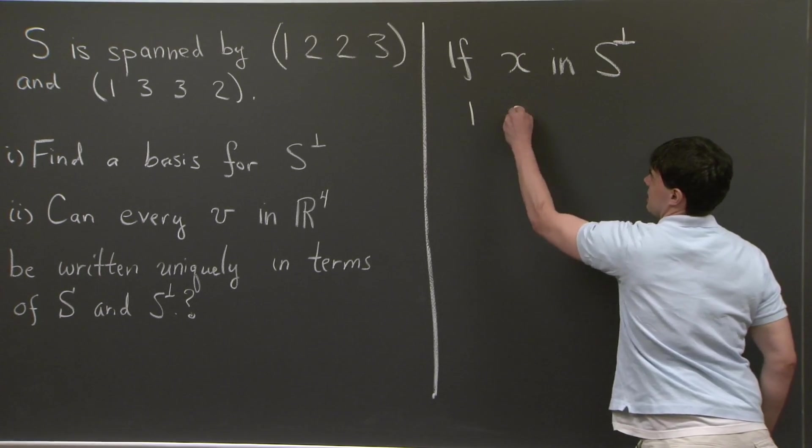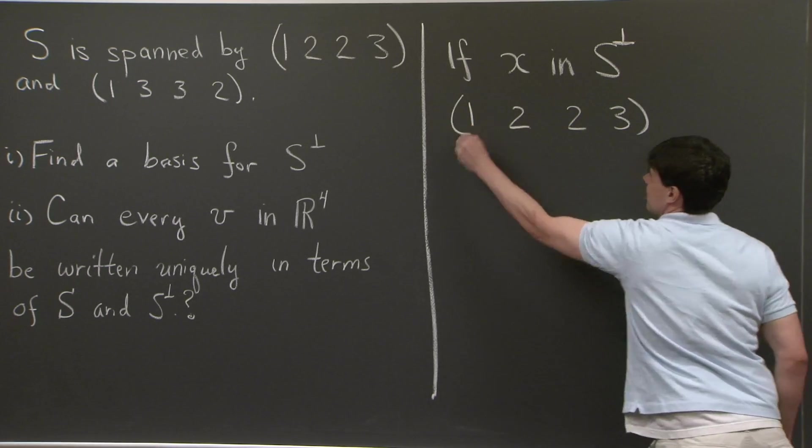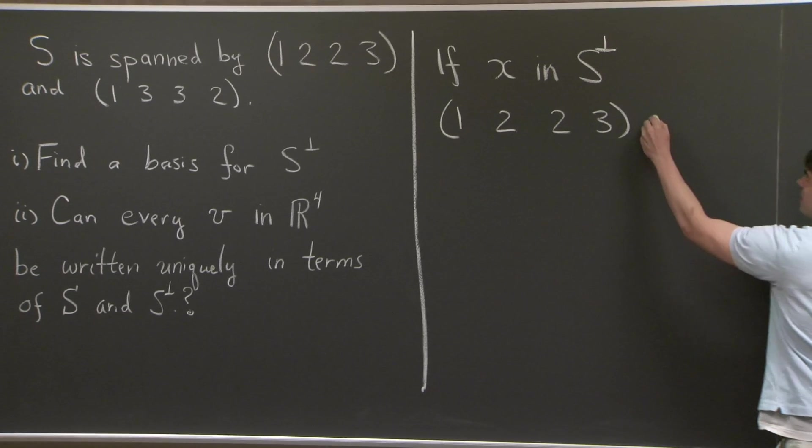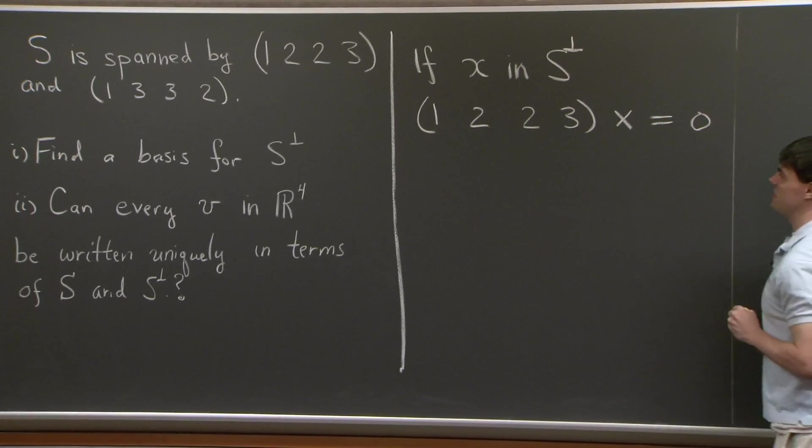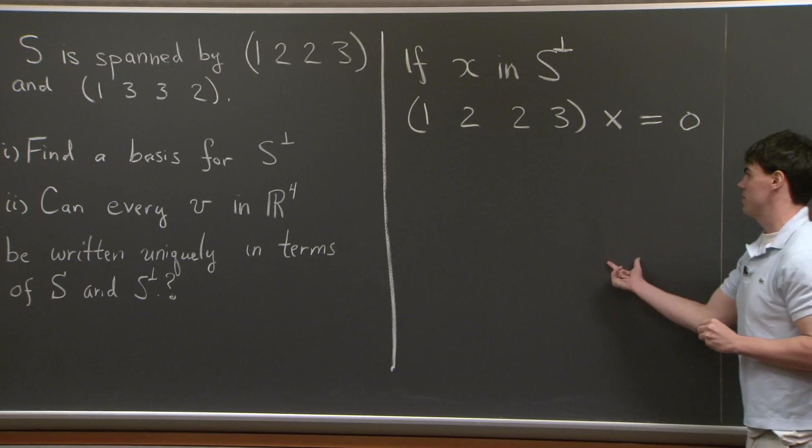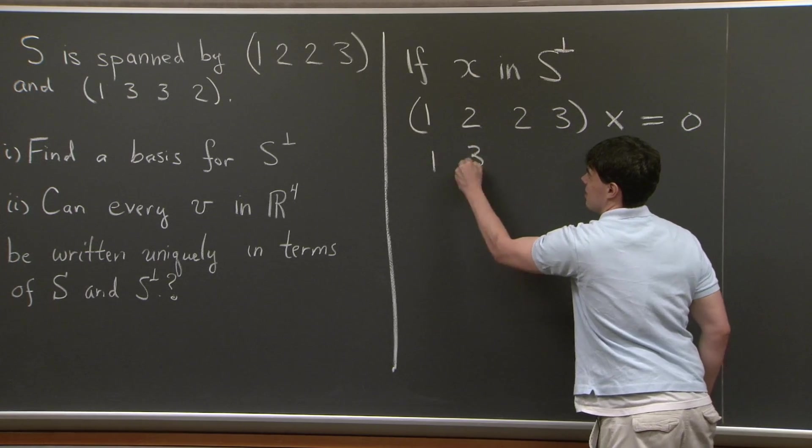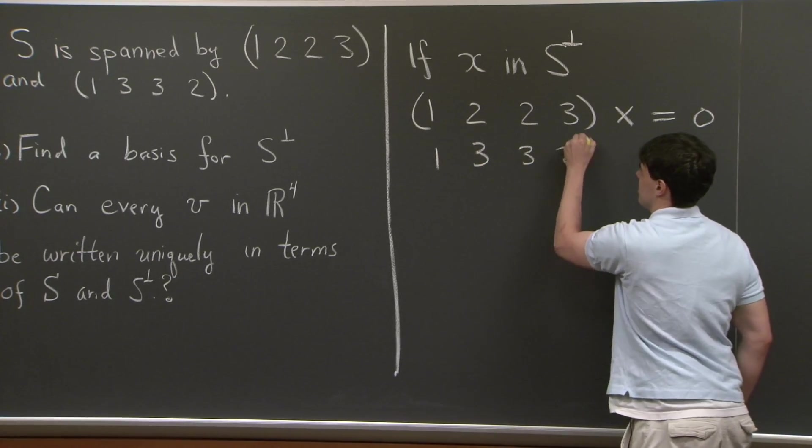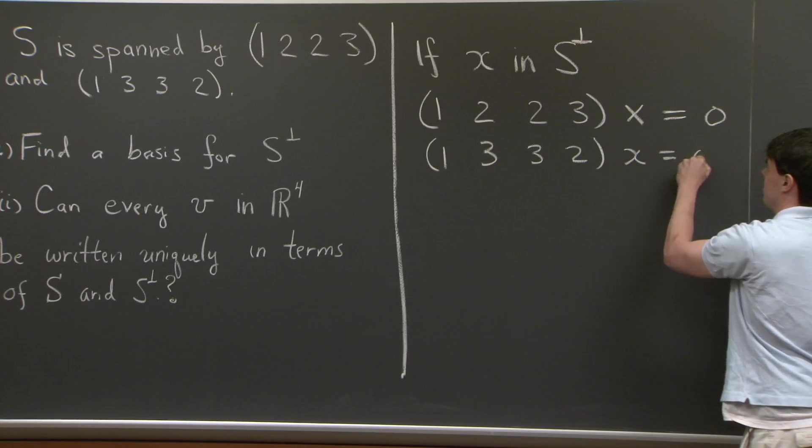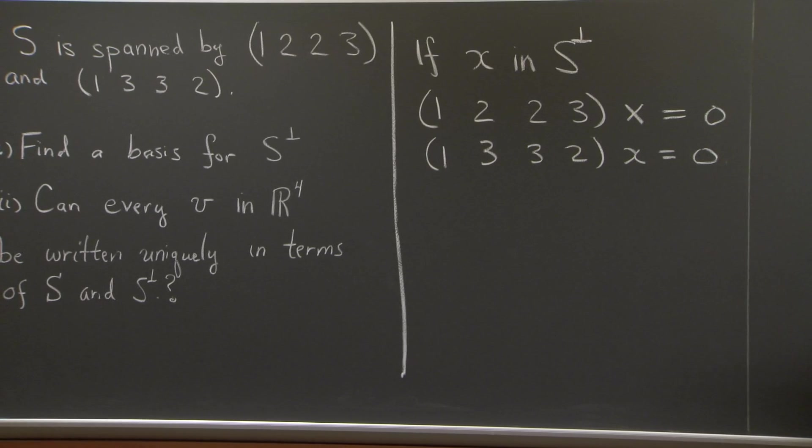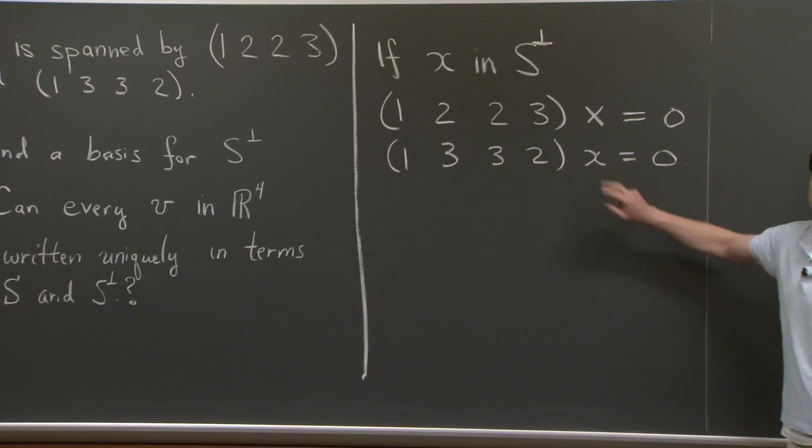So specifically, I can take (1, 2, 2, 3) and dot it with x. And it's going to be 0. So I'm treating x as a column vector here. In addition, x must also be orthogonal to (1, 3, 3, 2).